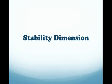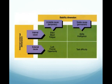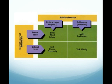The stability dimension refers to whether the cause is stable or unstable across time and situations. If the learner believes she failed an exam because she lacks ability, then her cause is stable, particularly if she believes her lack of ability is a permanent quality. However, if a learner believes she failed because of illness at the time of the exam, then the cause is unstable, as the illness is a temporary factor.